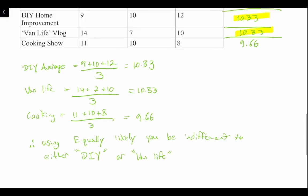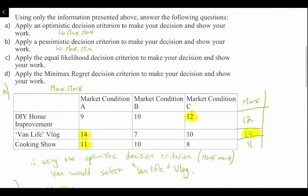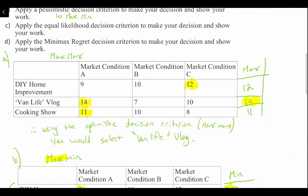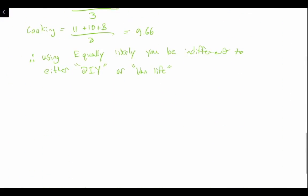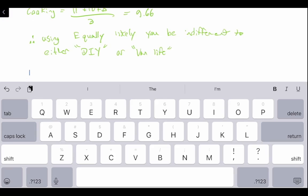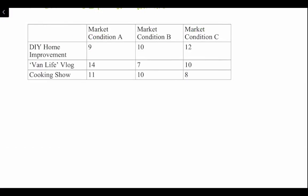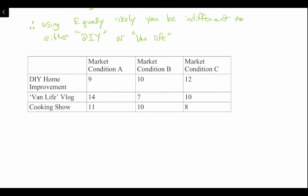Finally, Question D — apply the mini-max regret decision criterion. Regret is the difference between the payoff from the best decision and all other decision payoffs. Under each market condition, we identify what the best possible alternative is and then take the difference from there. We can understand this concept through regretting or rejoicing a decision.